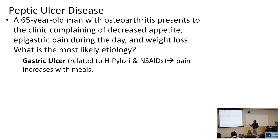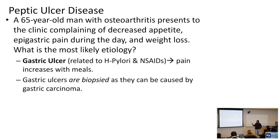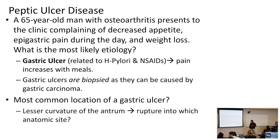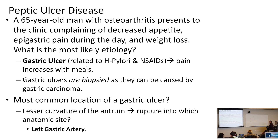Gastric ulcers are going to be biopsied, as they can be caused by gastric carcinoma as well. We really want to look at what these gastric ulcers look like under the microscope. The most common location of a gastric ulcer is at the lesser curvature of the antrum, and gastric ulcers can rupture into the left gastric artery — that's a key complication you need to know.